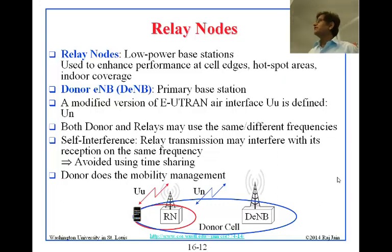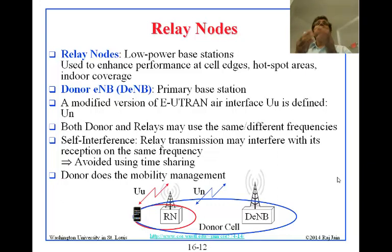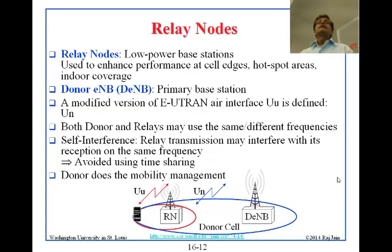What allows both to work at the same time is that the donor cell — the donor ENB — knows about the relay node and knows which mobiles the relay node needs to serve. So it allocates time for that. It is just coordination — CoMP. It tells the relay node: this is your time, you can do the downstream transmission. I am not going to do downstream transmission, at least not in your area. Same thing for the upstream transmission.